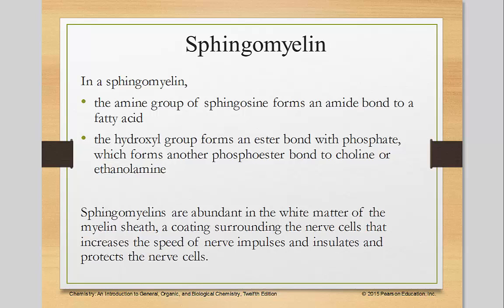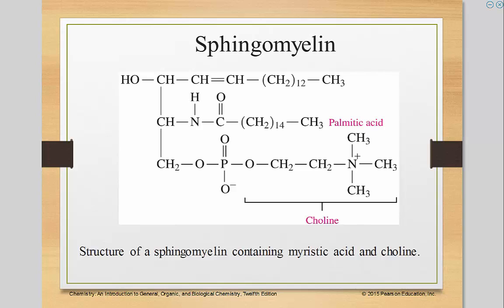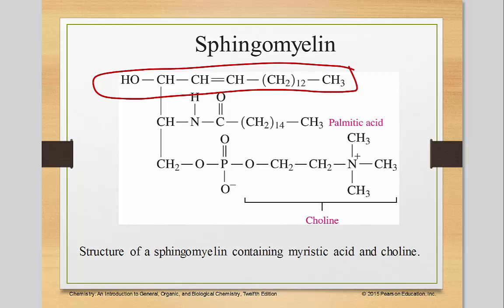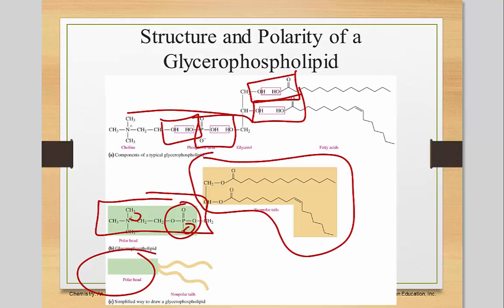Now in sphingomyelin, the amine group of sphingosine forms an amide bond to a fatty acid. The hydroxyl group forms an ester bond with phosphate, which forms another phosphoester bond to choline and ethanolamine. Notice on the very top, that's not an ester — it's merely a carbon chain. And the difference here is that instead of having an oxygen, you actually have another nitrogen. This region is similar to what we've seen in the phosphoglycerols. And that's your introduction to phospholipids.